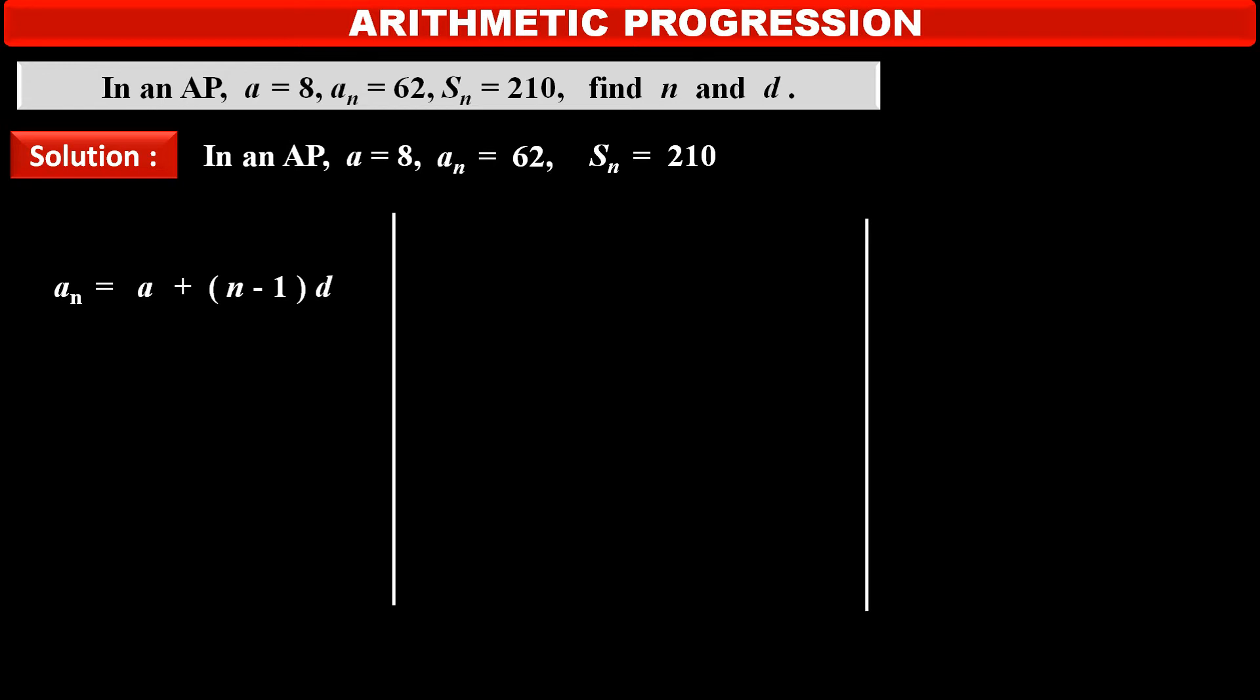We know the formula of Nth term AN is equal to first term A plus in bracket N minus 1 into common difference D.